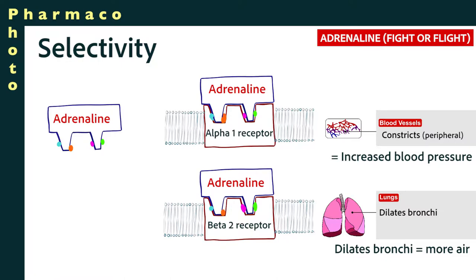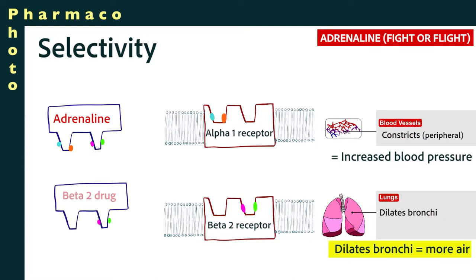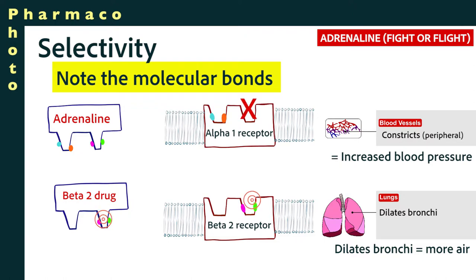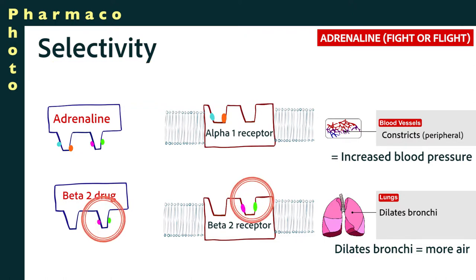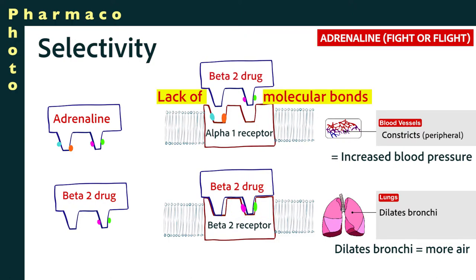Suppose we just wanted to get the therapeutic effects of adrenaline for a person with asthma, and all we wanted to do was open up the bronchi. If we developed a selective beta-2 adrenergic medication, we could do that without constricting the blood vessels and without the major side effects. That can be represented by diagrams where the beta-2 medication has a strong binding to the beta-2 receptor but very weak binding to other parts of the adrenergic receptor.